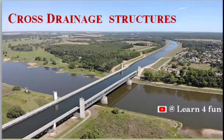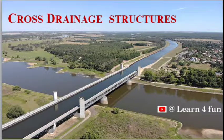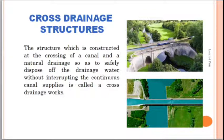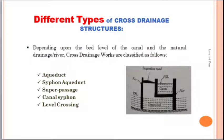Welcome friends. In the next six minutes we are going to learn about different types of cross drainage structures. When a road crosses a river we need to construct a bridge. Similarly, when a canal crosses a river we need to construct some type of cross drainage structure — the structure constructed at the crossing of a canal and a natural drainage so as to safely dispose of the drainage water without interrupting the continuous canal supplies is called a cross drainage work.